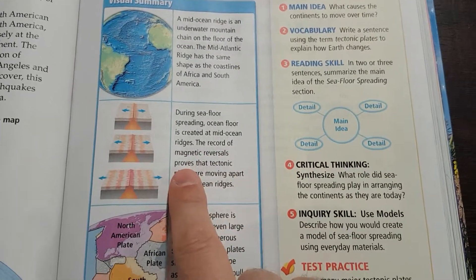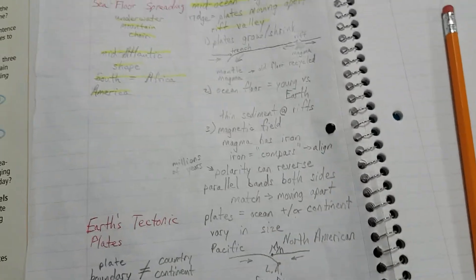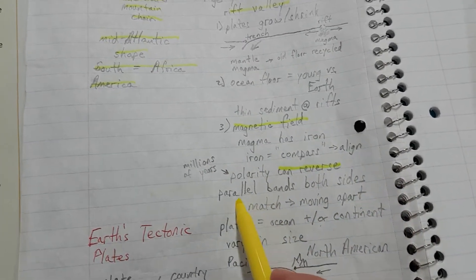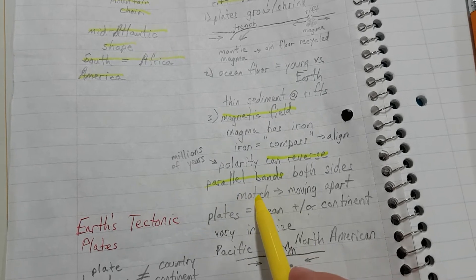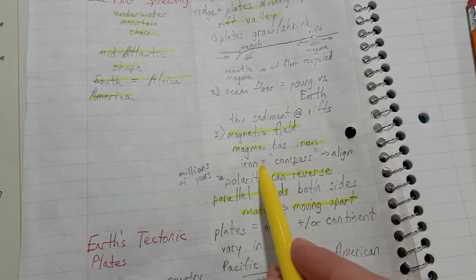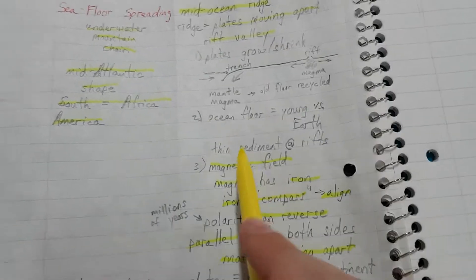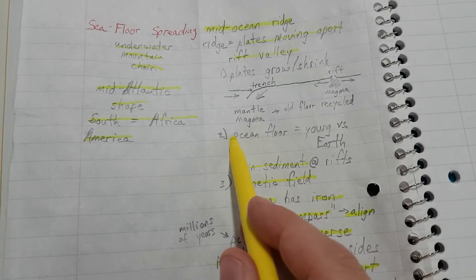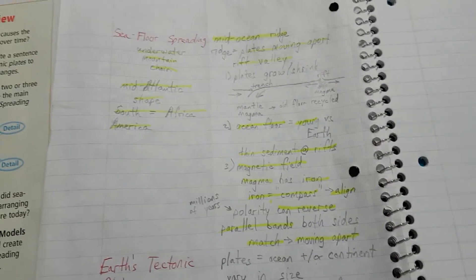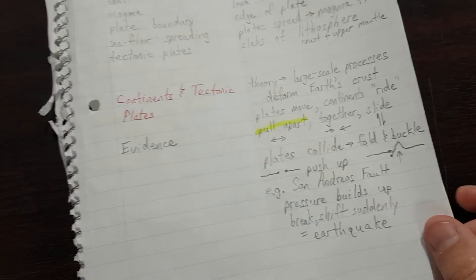The record of magnetic reversals proves that tectonic plates are moving apart at mid-ocean ridges. Okay. So, let's find that part about the magnetic reversals. The magnetic field can reverse, and those parallel bands matching shows that they are moving apart. How do we know that they can reverse? Because magma has iron, and the iron acts like a compass to align. It feels like we're highlighting everything, so we're going to have to go back and make more annotations to pick only the really, really important stuff.